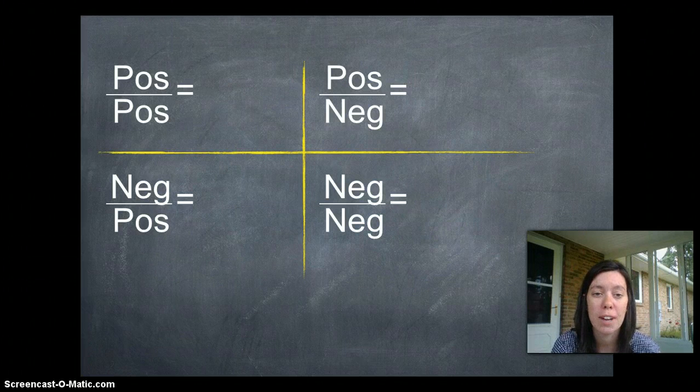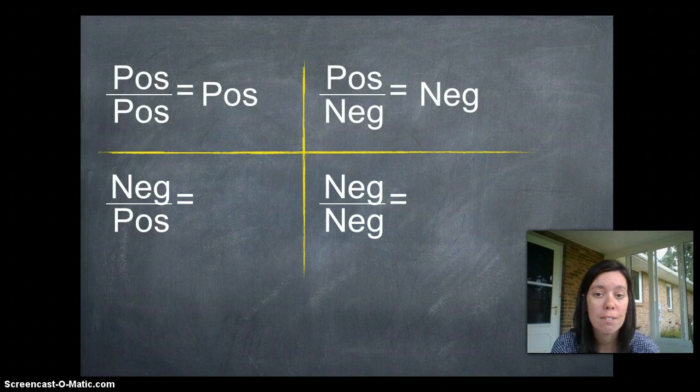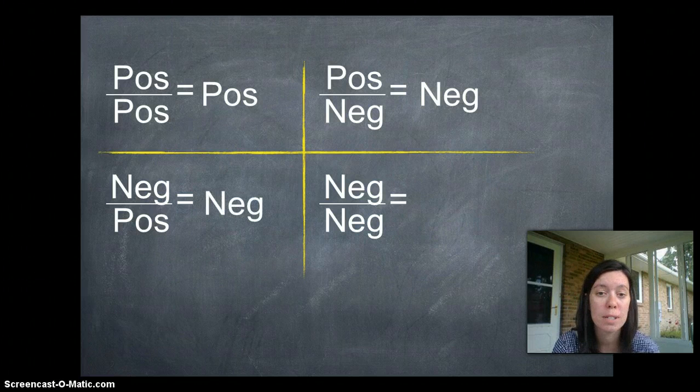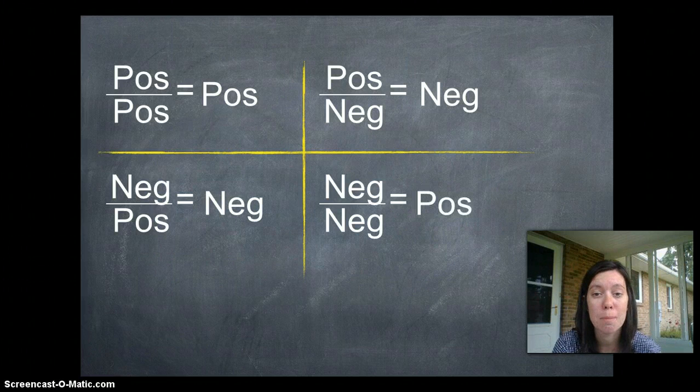So if I have a positive divided by a positive, that's a positive. Positive and negative make a negative - doesn't matter which one's on top. And two negatives, the negatives cancel and that makes a positive. So it's the same as multiplying.